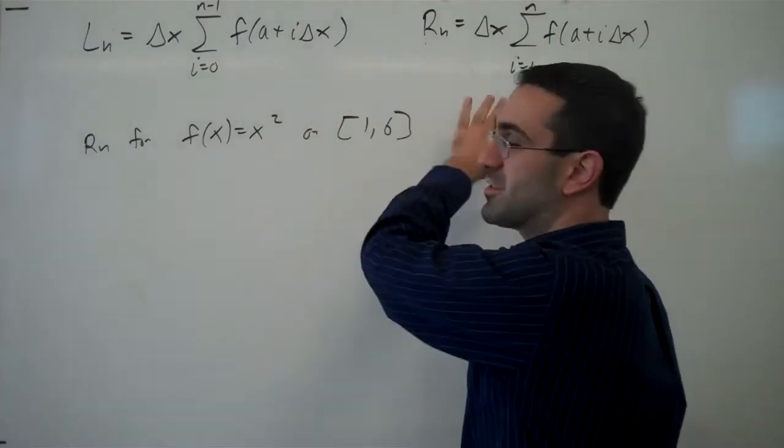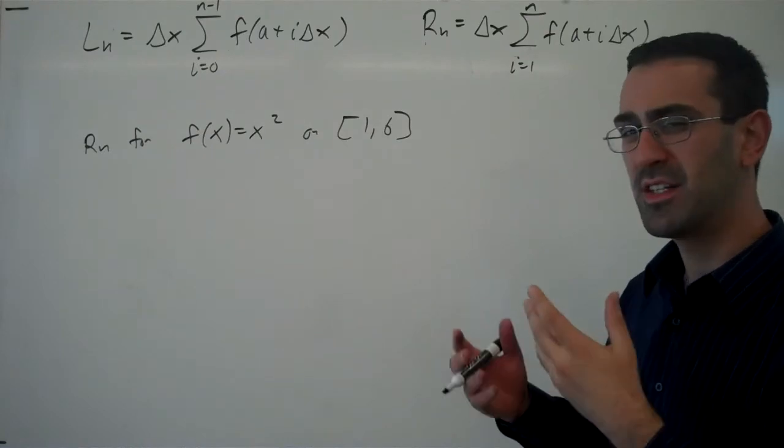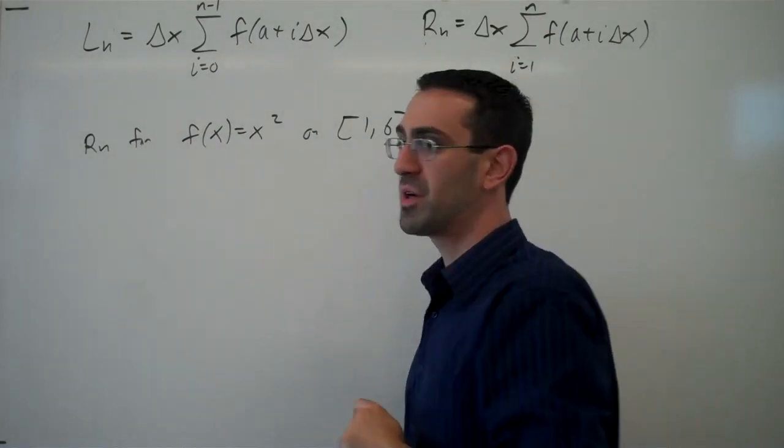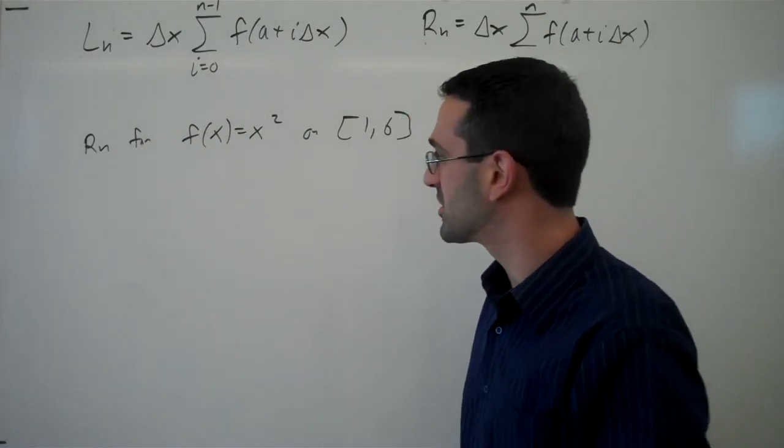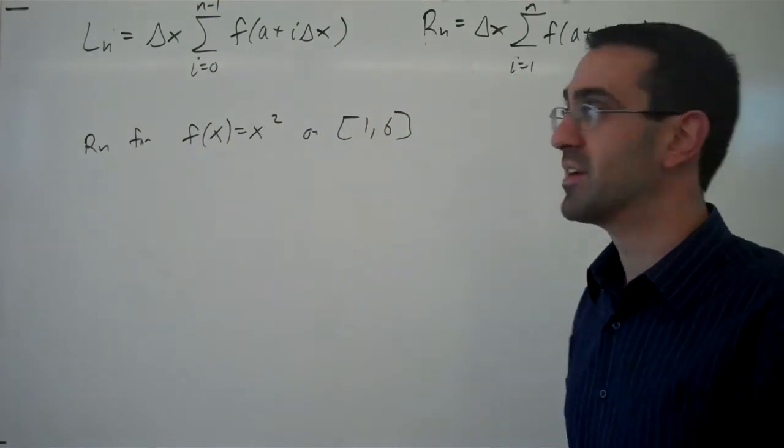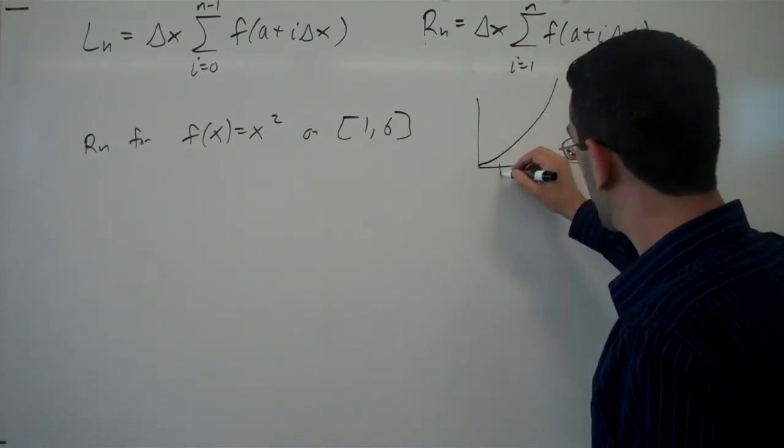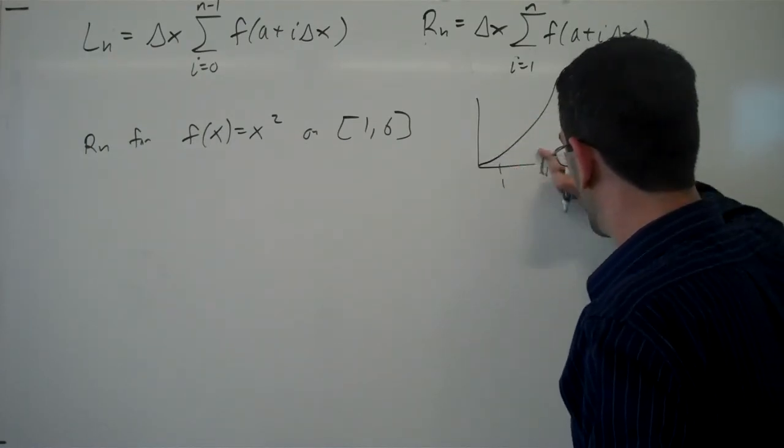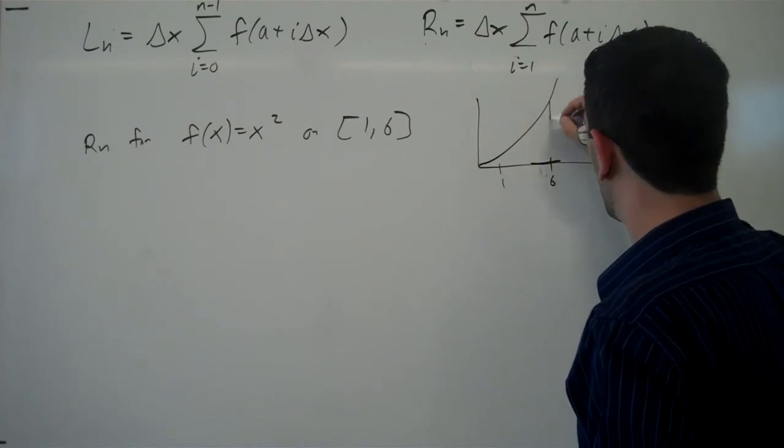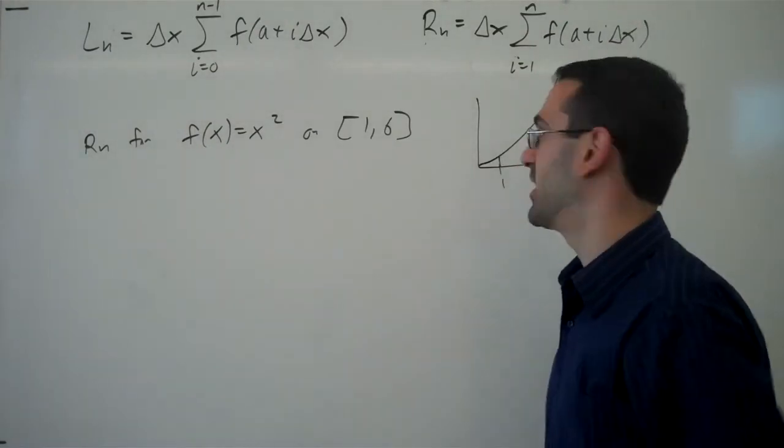Using the summation form of the left and right endpoint approximations, we want to find an expression for the right endpoint approximation with n subdivisions for the function f(x) = x² on the interval 1 to 6. This corresponds with the area under the curve from 1 to 6 using n rectangles right endpoint approximation.